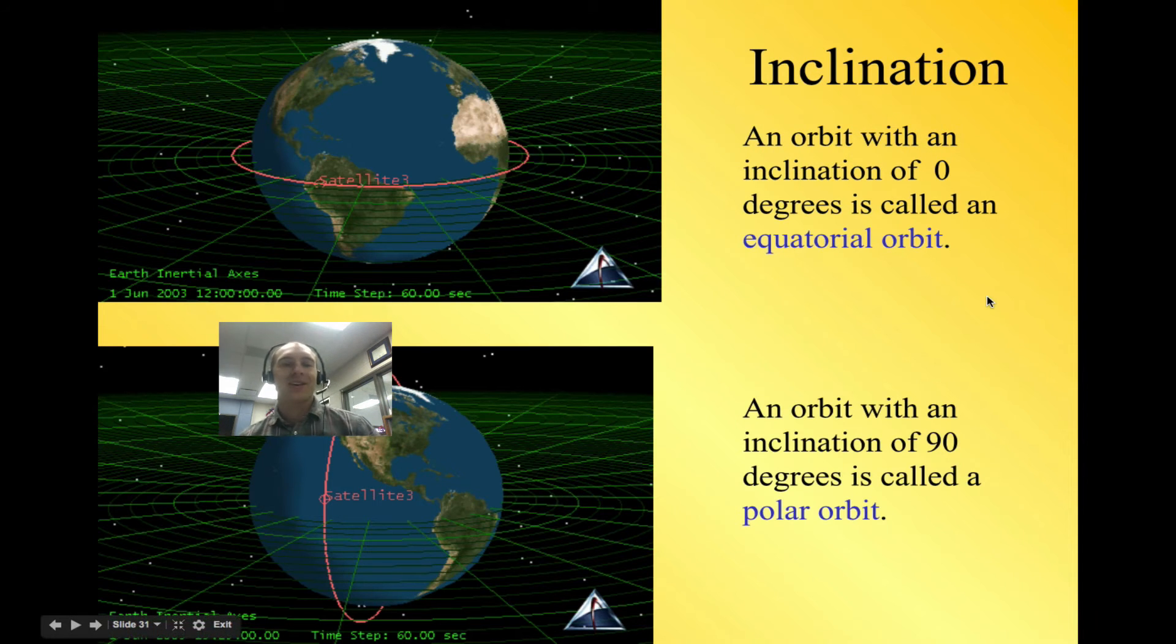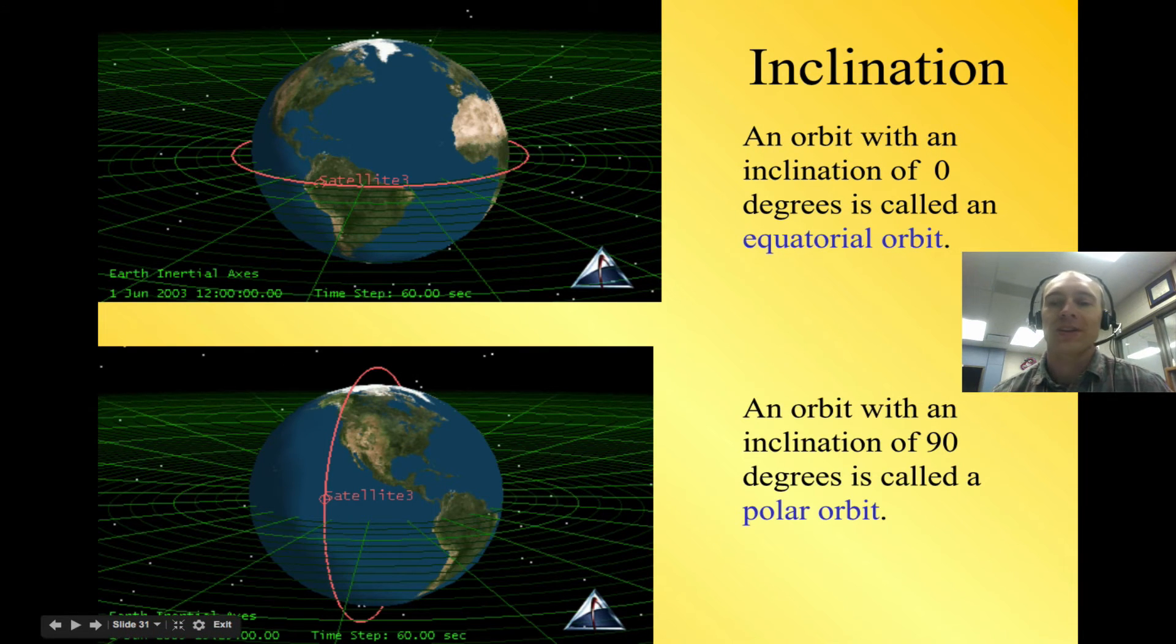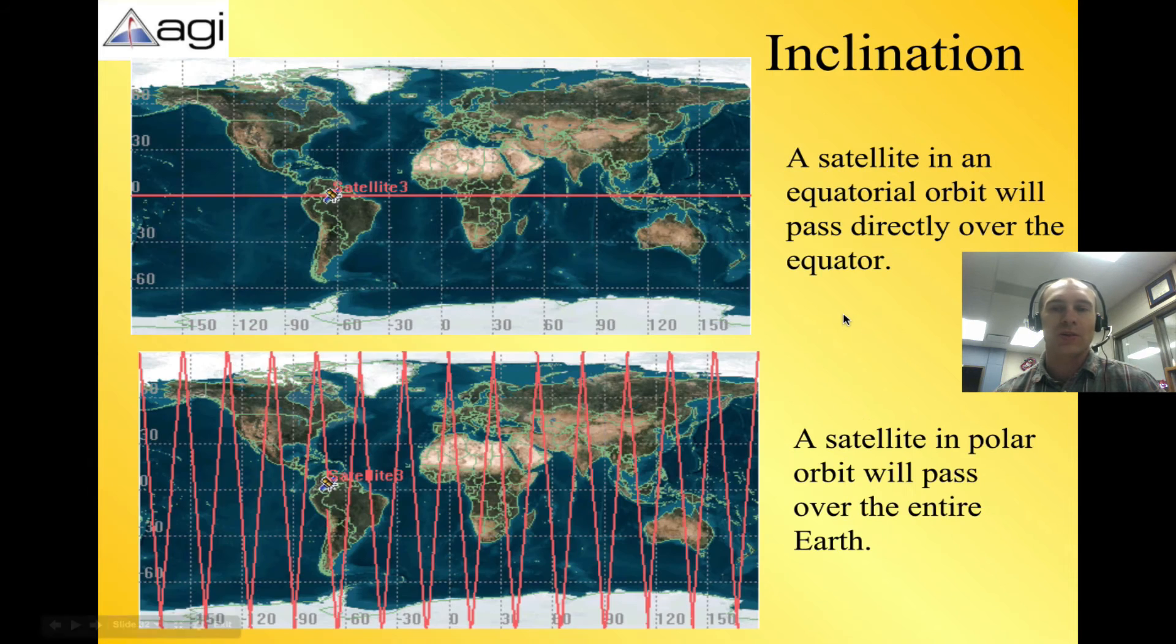All right, so let's look one at a time at inclination. An orbit with an inclination of 0 degrees is called an equatorial orbit, and one with an inclination of 90 degrees is called a polar orbit. Both of these are really important to note down because they're very common type situations.